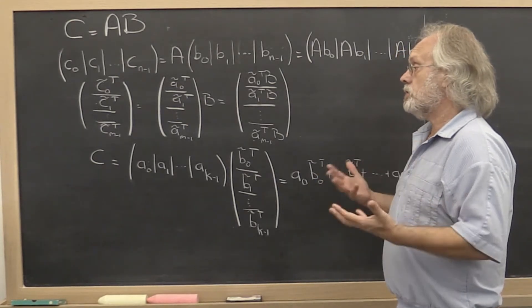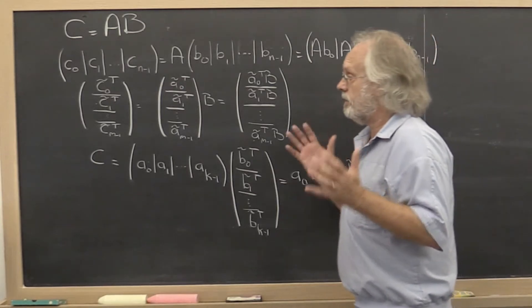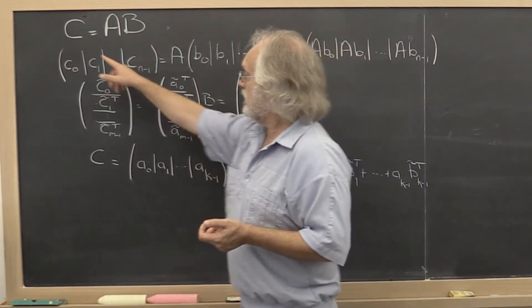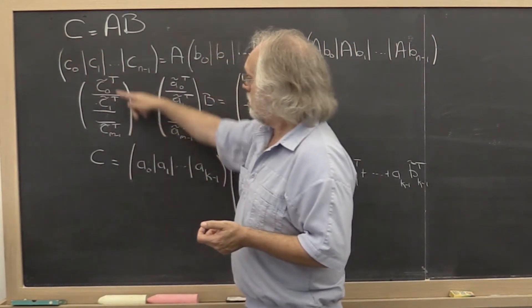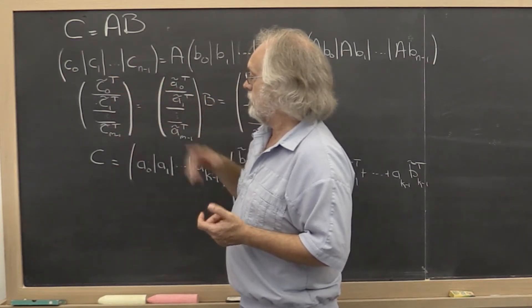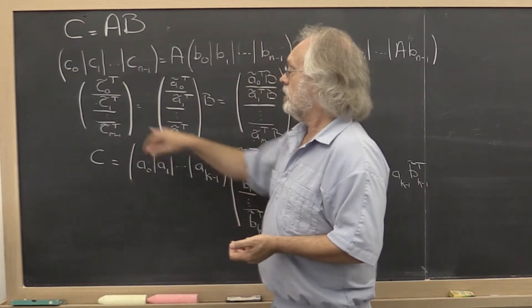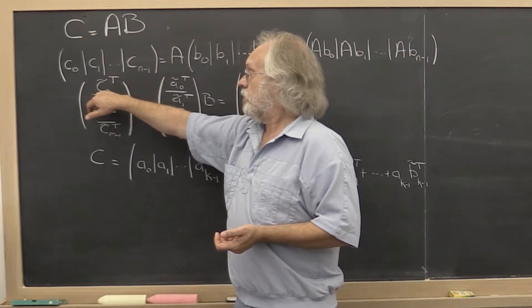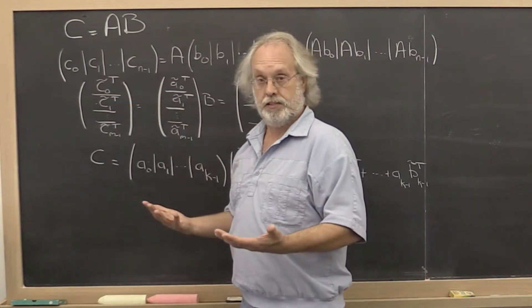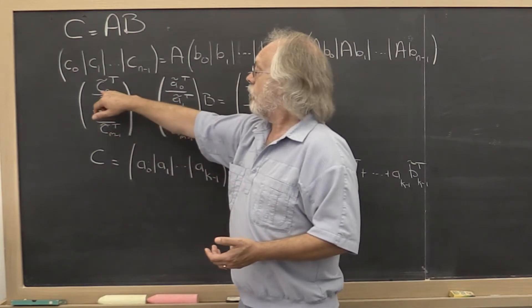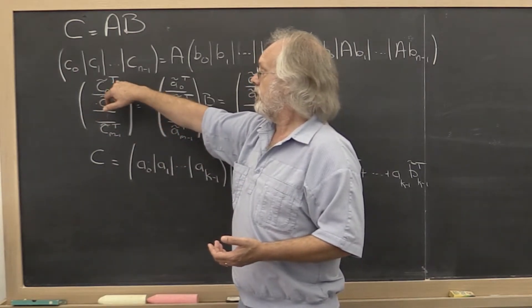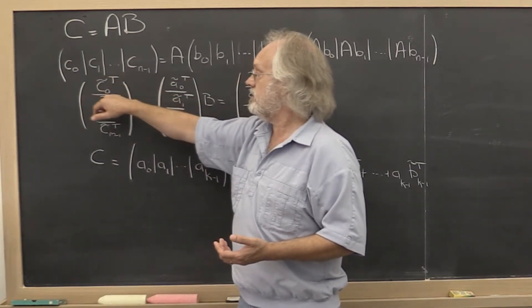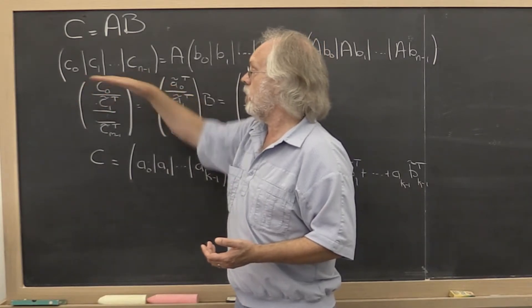Now it's important to also be able to think about it in a different way. We can also take matrix C and partition it into its rows. Now in our notation, a lowercase letter C would represent a column vector. And therefore we're putting a transpose on that to indicate that this is really the symbol that represents a row in the matrix.